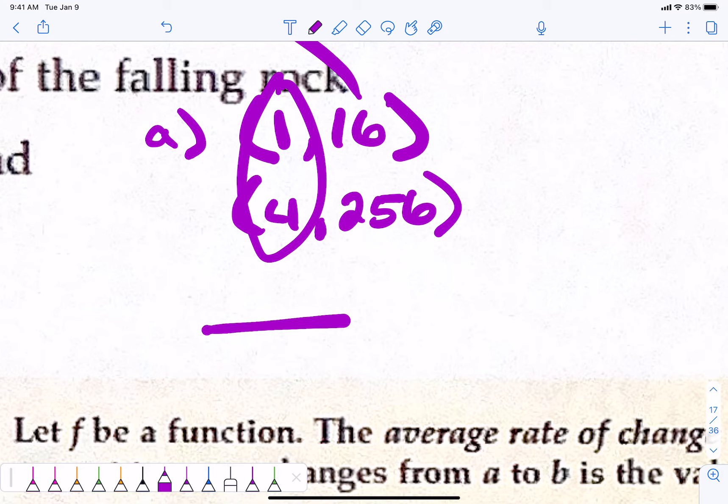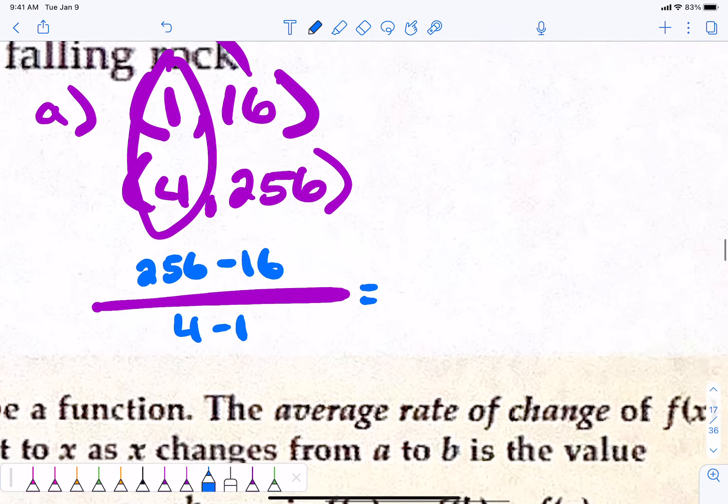So, let's set this up. 256 minus 16 goes on the top. 4 minus 1 goes on the bottom. 256, this would be 240 over 3. 240 over 3 is 80. Now, hold on. Let's put some units behind this.